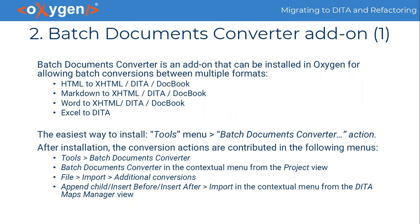The batch documents converter is an add-on that can be installed in Oxygen for batch conversion between multiple formats. Supported conversions include HTML to XHTML, DITA, and DocBook; Markdown to XHTML, DITA, and DocBook; Word to XHTML, DITA, and DocBook; and Excel to DITA. In this webinar we will focus on conversions to DITA. The easiest way to install the add-on is by invoking the batch documents converter action from the Tools menu. After installation, the conversion actions can be found in the Tools menu, the contextual menu from the Project view, the File > Import menu, and in the append child/insert before/insert after submenus in the contextual menu from the DITA Maps Manager view.